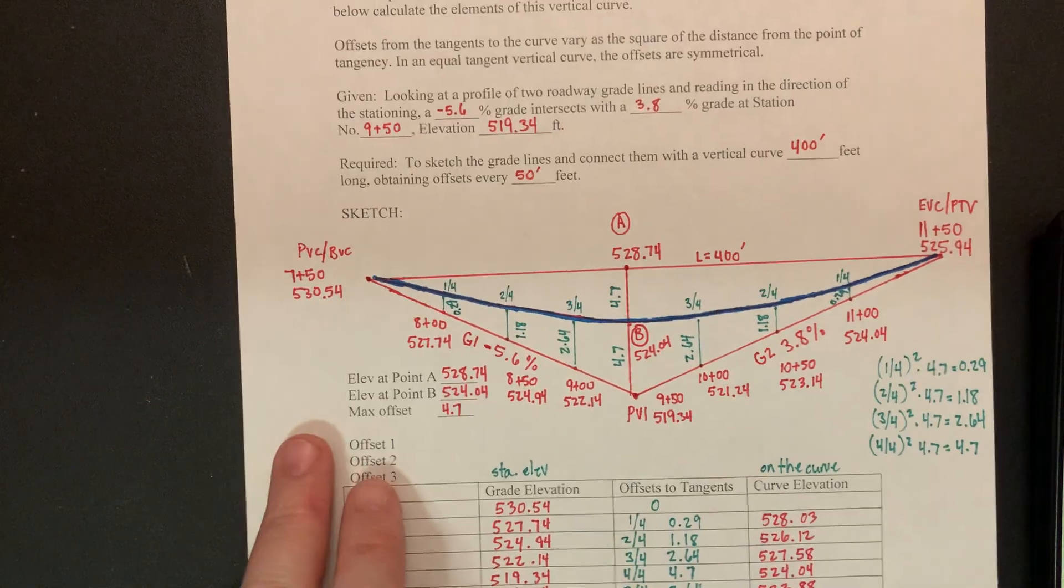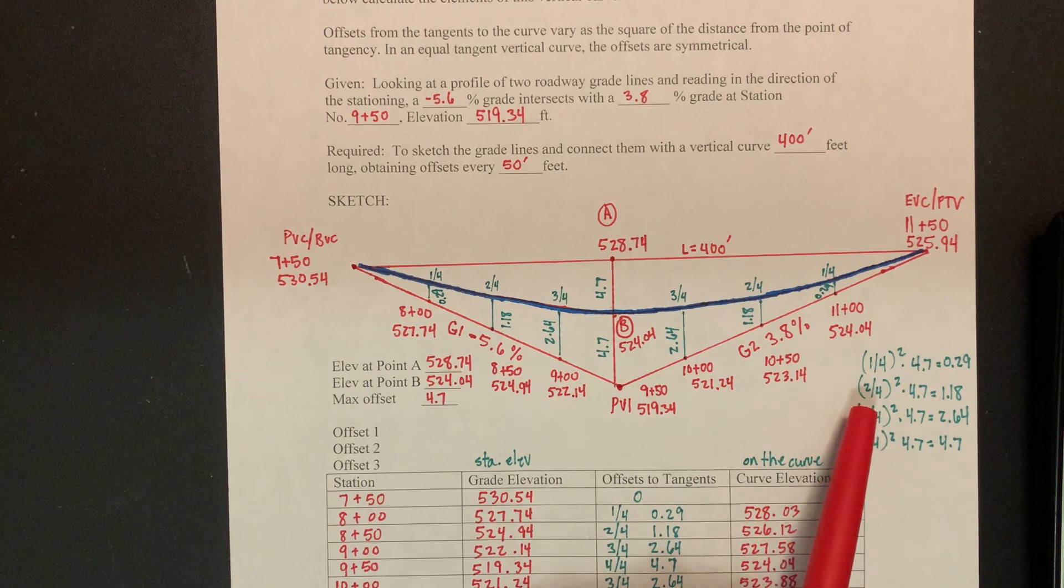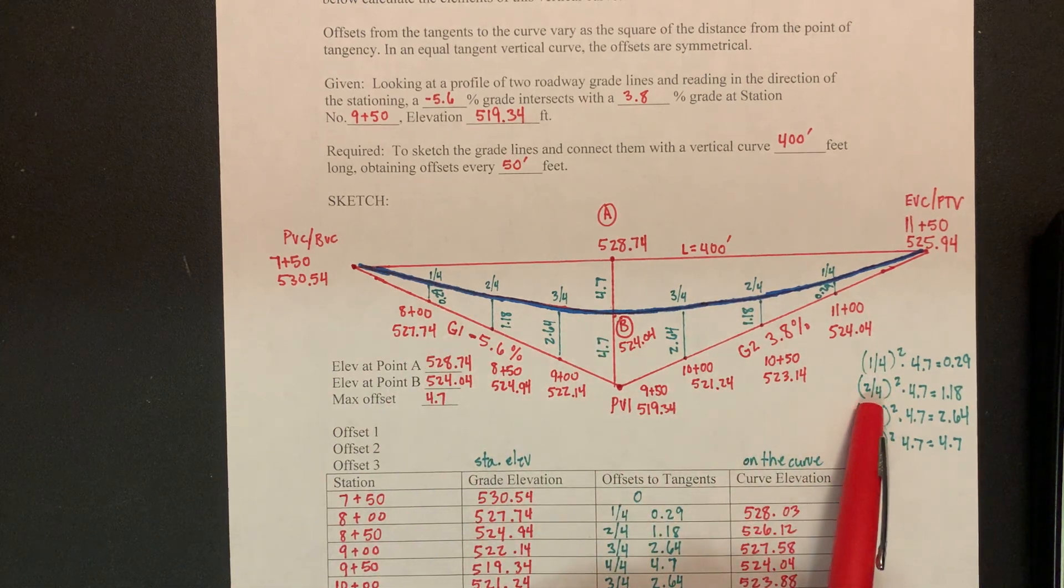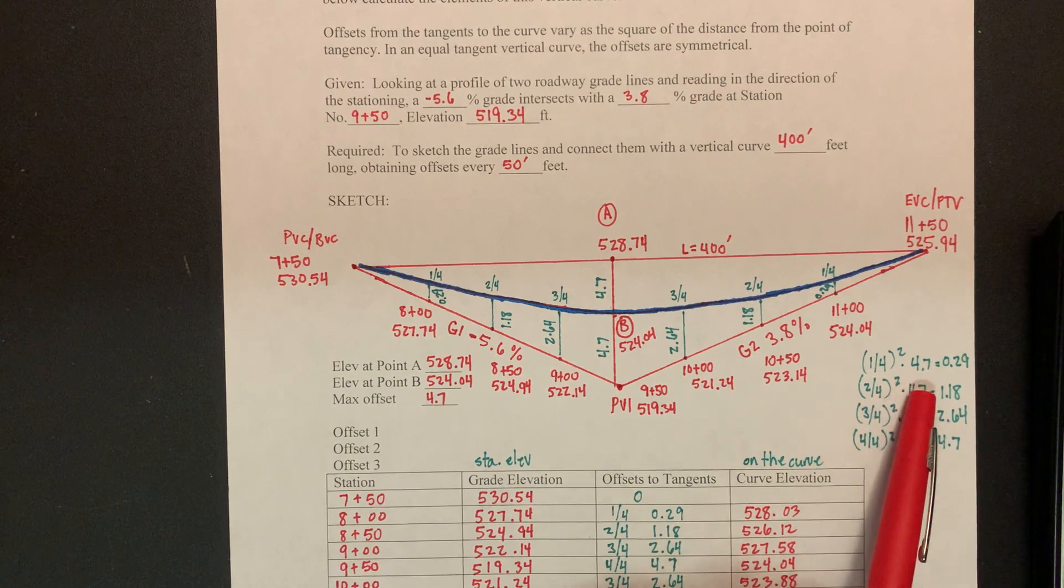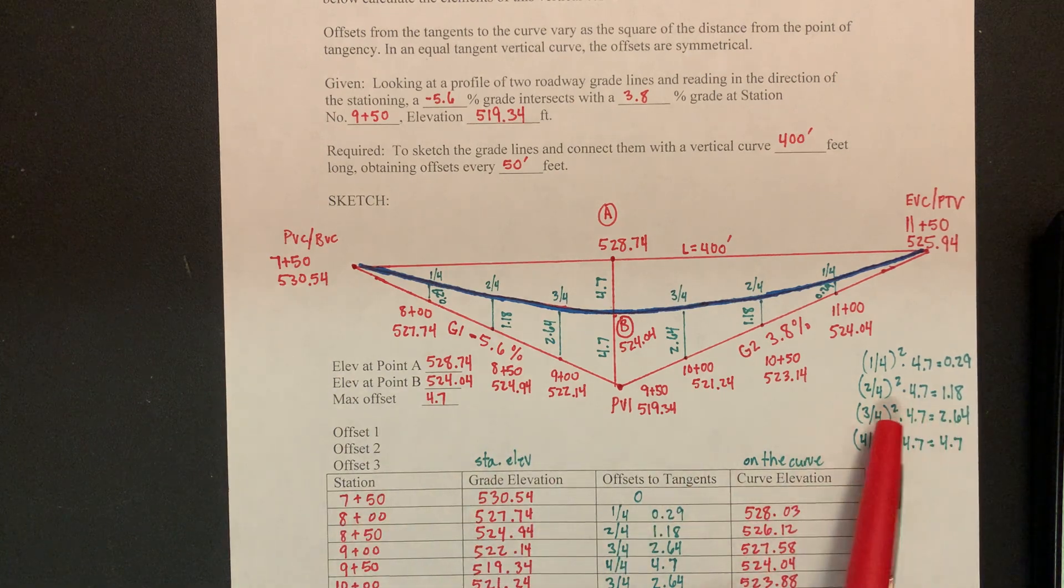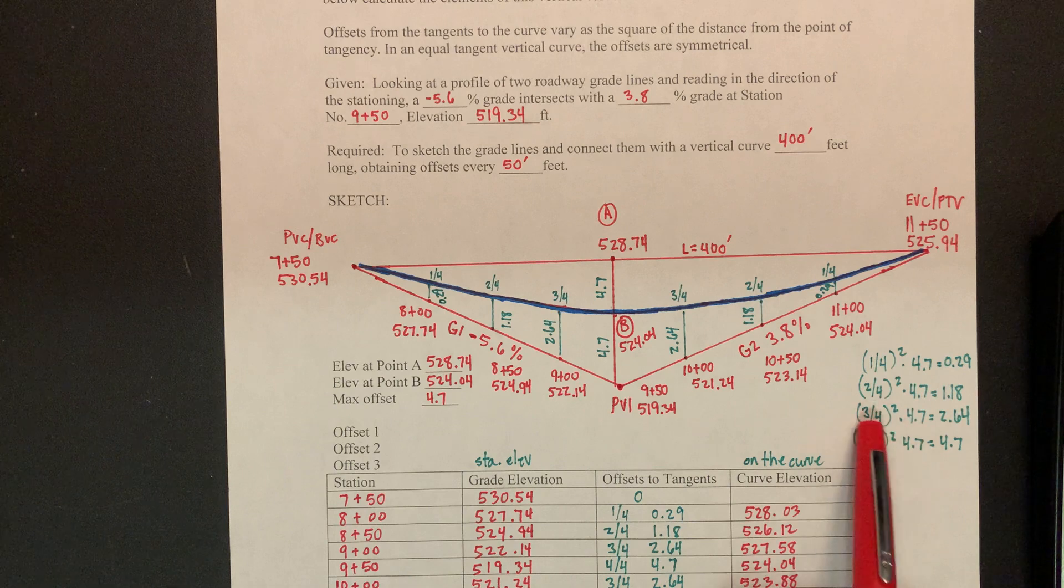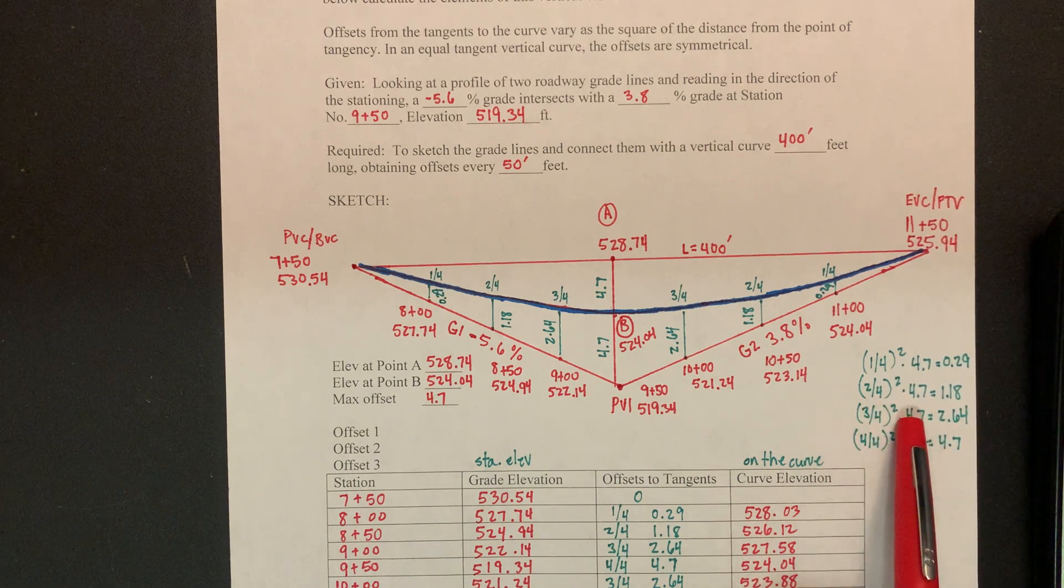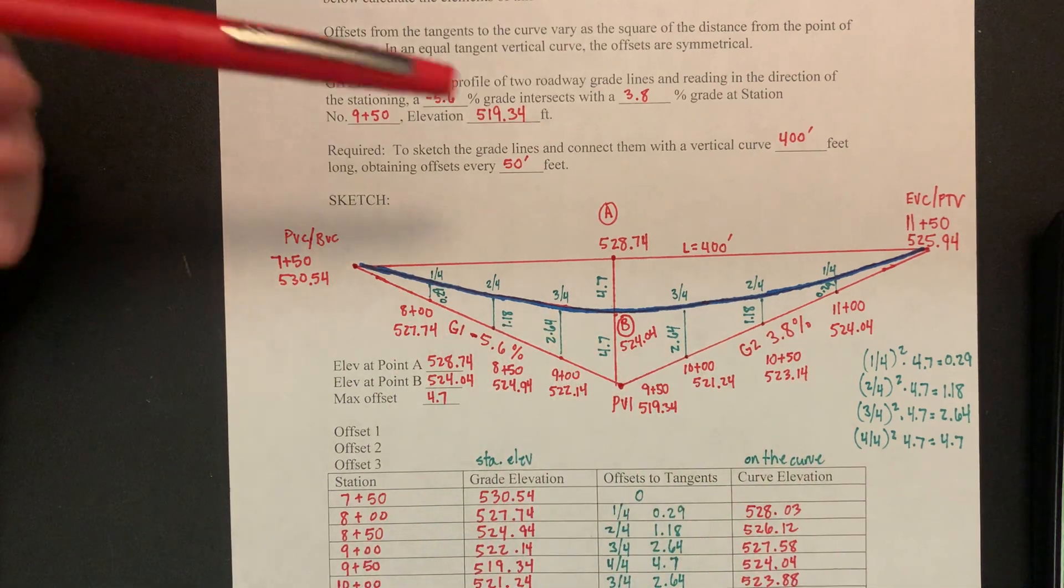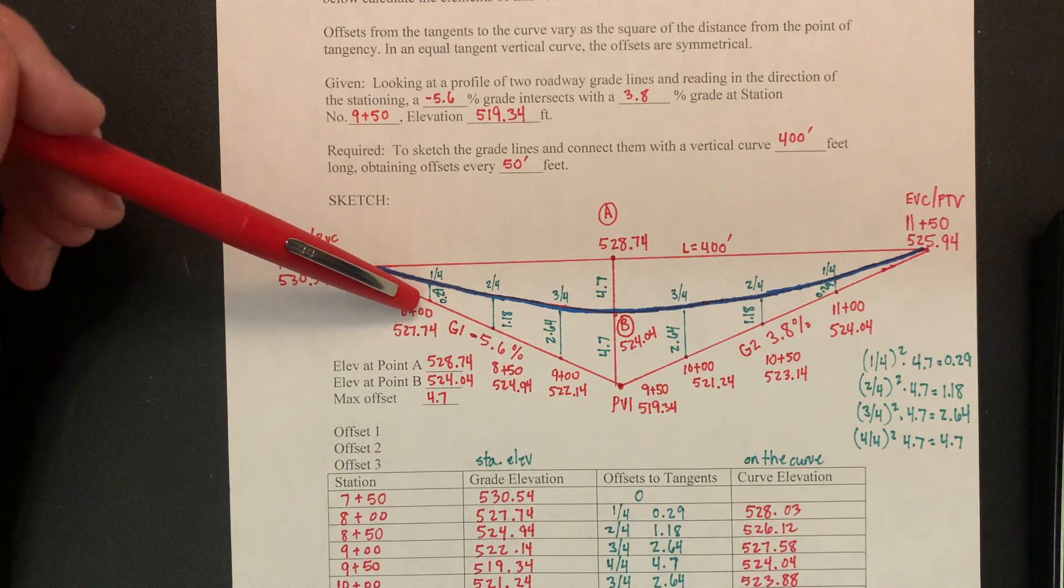So if you were doing this by math, you're going to take each, you're breaking it down in fractions, right? So you're going to go 1 over 4 and you're going to square it and then multiply it by your tangent offset. And that'll equal 0.29. And then the same thing for each one. And so this one's, since it's symmetrical, this one will be 0.29, 0.29. And of course the next one, you go 2/4 square and then multiply 4.7. This will give you 1.8, 1.8, 2.6, 4. And so you can see these tangent offsets are going to help you calculate the distance from your station elevation to your curve elevation.